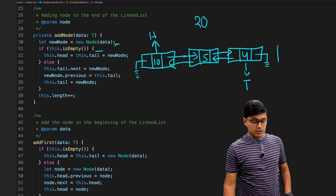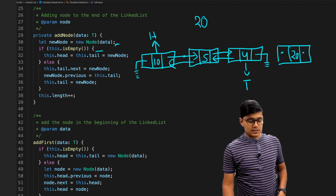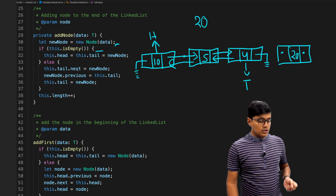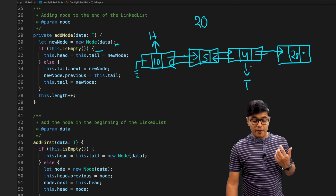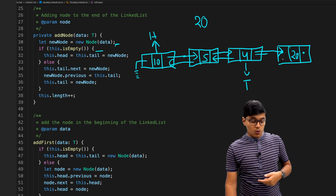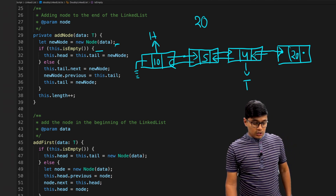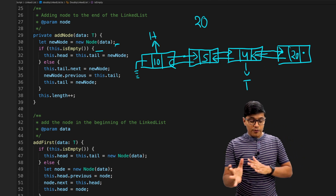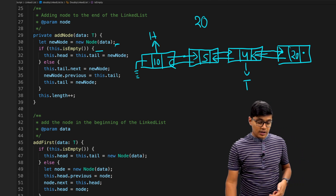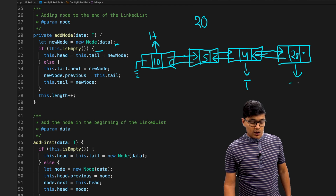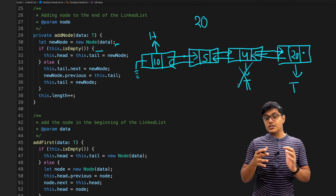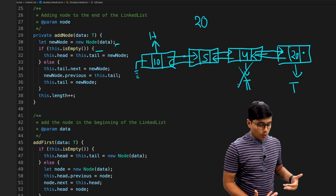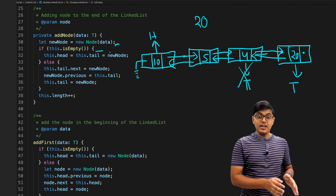If the linked list already has nodes, say three nodes, we create the new node — say with value 20. We set tail.next to the new node, and the new node's previous to the old tail. Now all nodes are connected. Then we move the tail reference to the new node. The node has been successfully added to the end of the linked list. This is what the addNode method does.